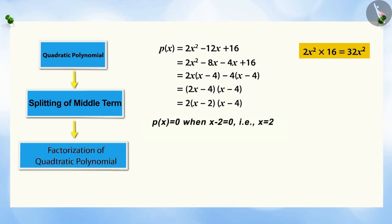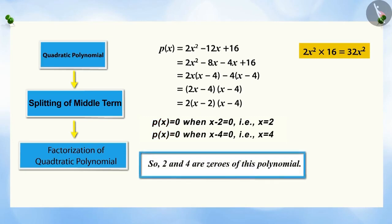Therefore, for X minus 2 equals 0, that is X equals 2, or X minus 4 equals 0, that is X equals 4, the value of the polynomial will be 0. So 2 and 4 will be the zeros of this polynomial PX.